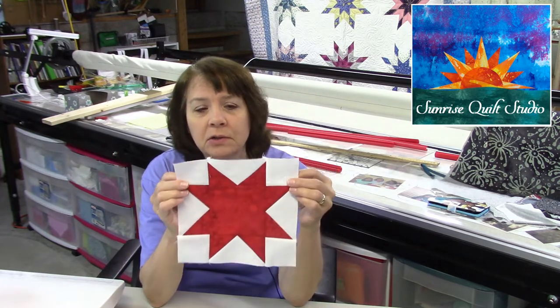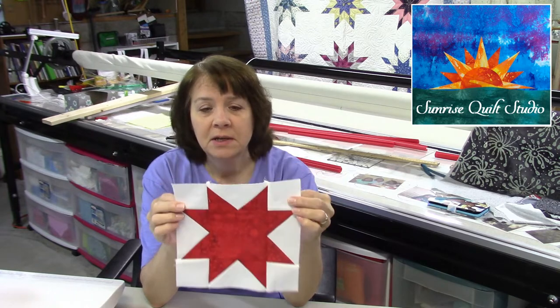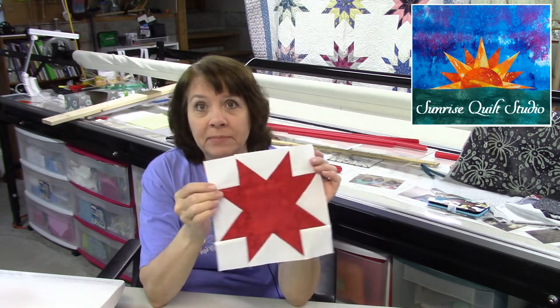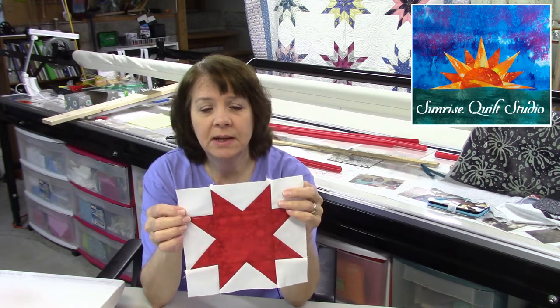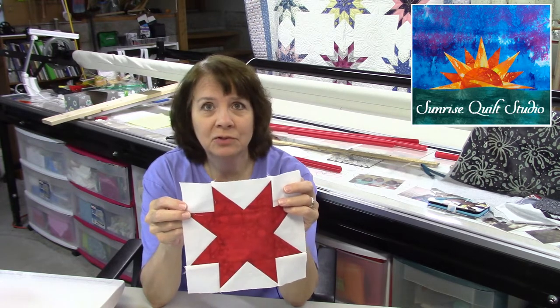Hi everybody, it's Susan from Sunrise Quilt Studio and welcome to week number 23 of the Stash Buster block series. And our block this week is called Squares and Points. And this is an eight-pointed star. So this one is going to go together really easy and I think you'll enjoy it.